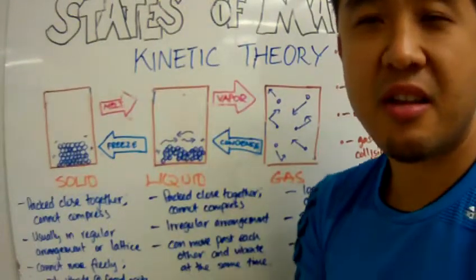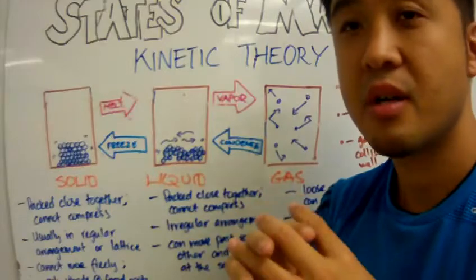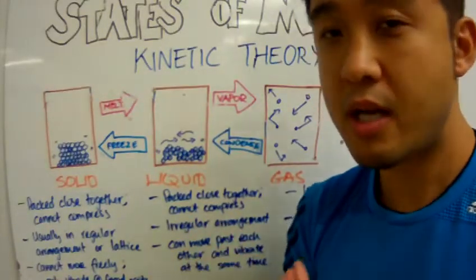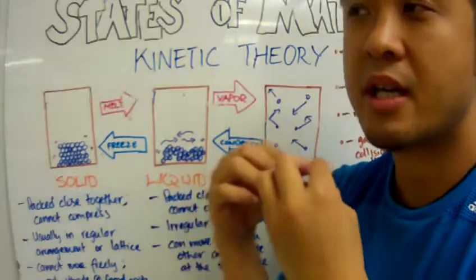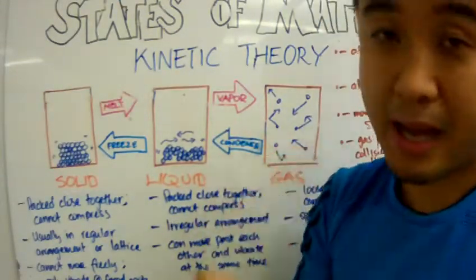To understand the atomic nature of the different states or the different phases of matter, we can use what we call the kinetic theory of matter.